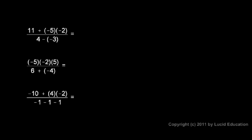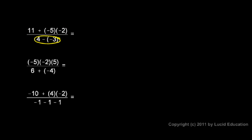Here are some more examples. Every one of these examples is a fraction — you see the fraction bar, which means we have the numerator divided by the denominator. In every case, we'll compute a value for the numerator, get a number there, and a value for the denominator, get a number there, and then we'll divide.